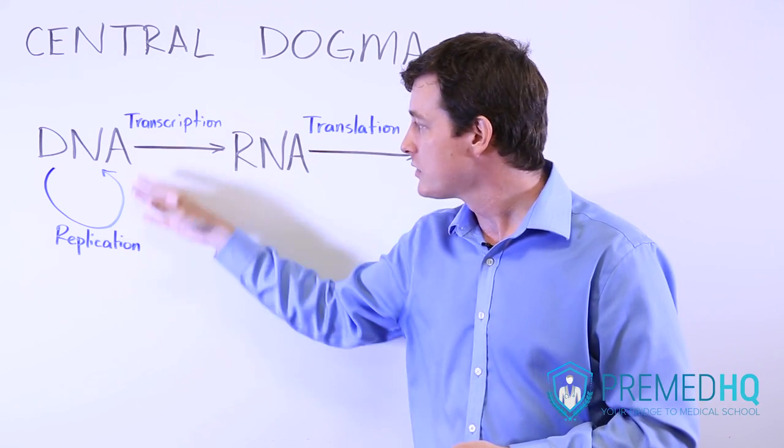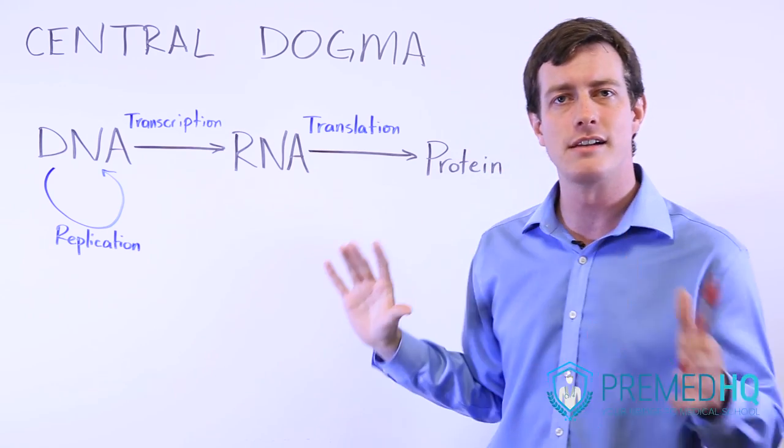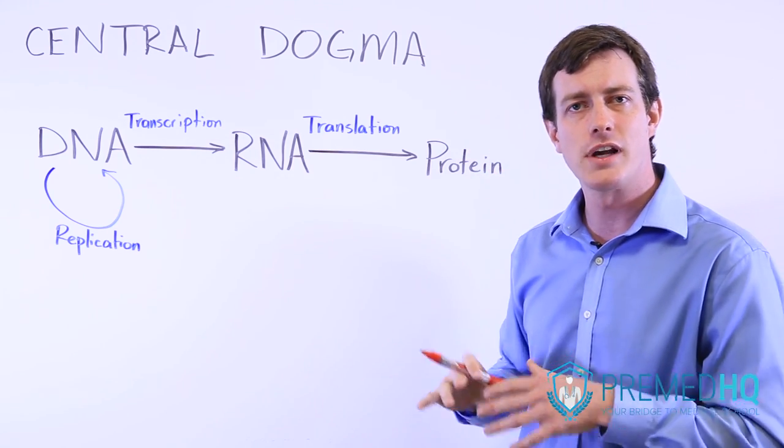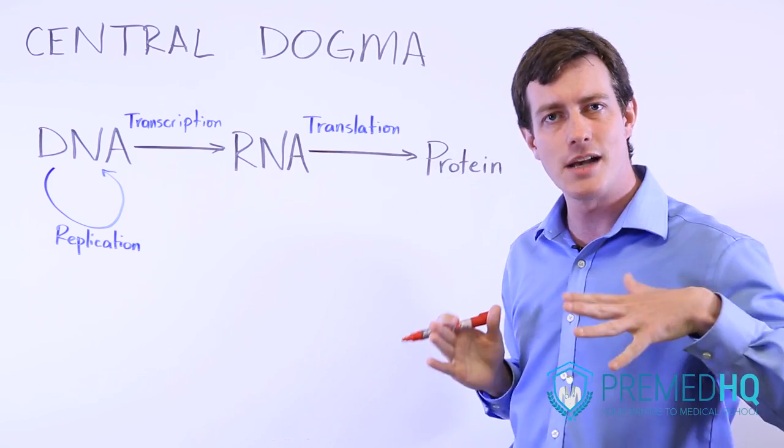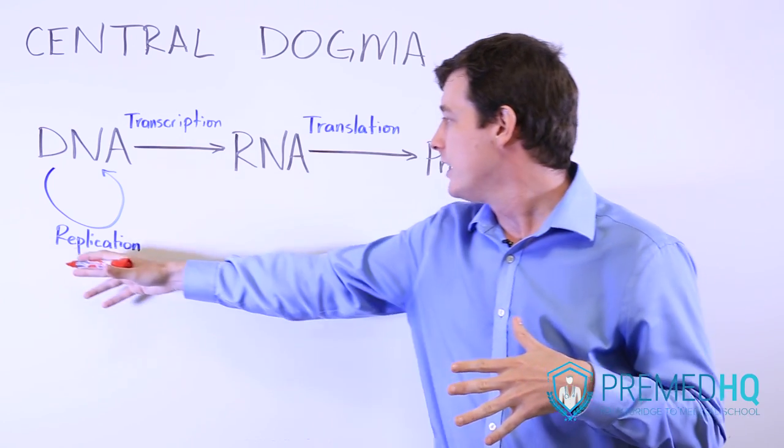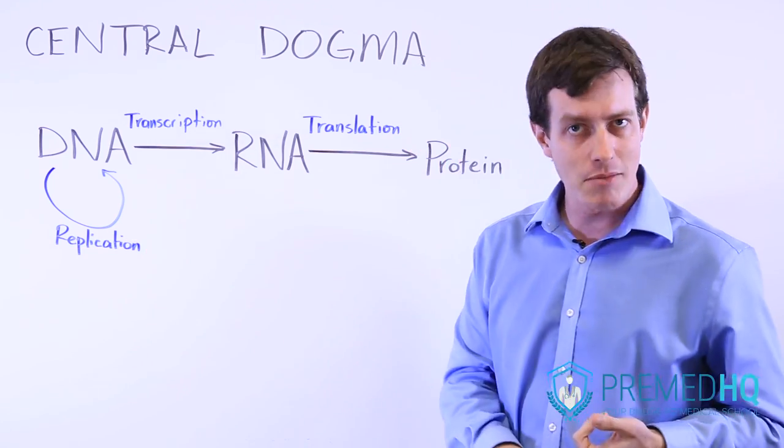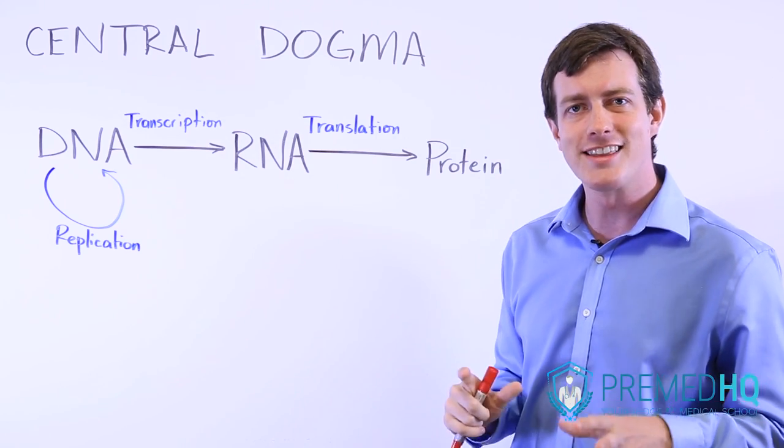And then replication has its own set of factors. It has helicases that unwind. It has single strand binding proteins that help stabilize the two parent template strands. And it involves DNA polymerases, primers, and different components like that.